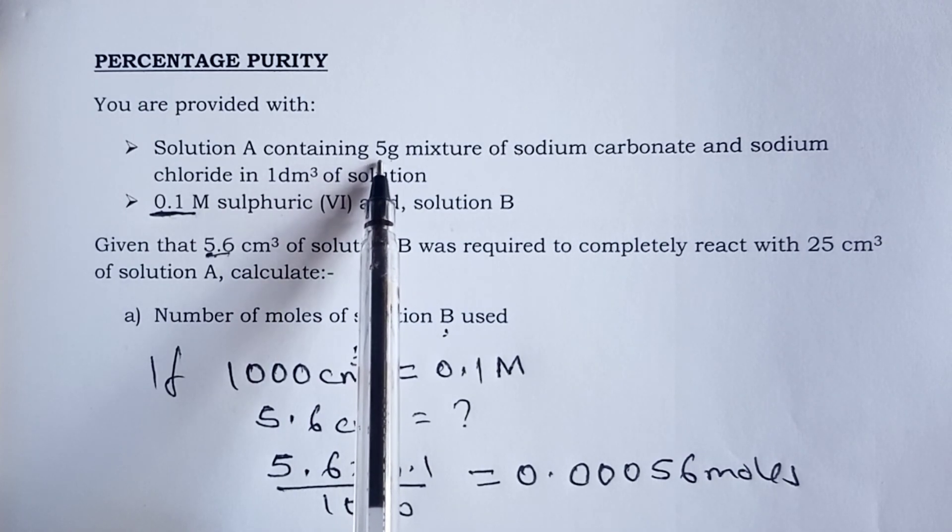Moving on to part B, we are asked number of moles of sodium carbonate in mixture A. Now, with the information about sulfuric acid acting as solution B, for mixture A, we only have the information about the mass. You can see it here, 5 grams. And again, the whole of these 5 grams is not sodium carbonate. It is the mixture. So this mass here may not even be very useful.